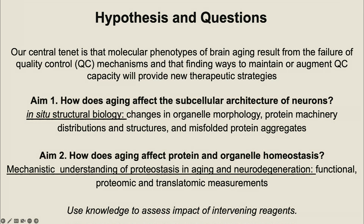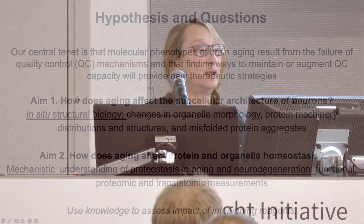We have two major aims. The first is understanding how aging affects the sub-cellular architecture of neurons — how it affects organellar integrity and the distribution of quality control factors in aged neurons. For this, the work of Wachu's lab doing in situ structural biology will be fundamental, and the AI work from Serena's lab will be very important to interpret this complex data. We also want to mechanistically understand how this in situ structural biology relates to actual mechanisms via functional proteomic and translatomic measurements.